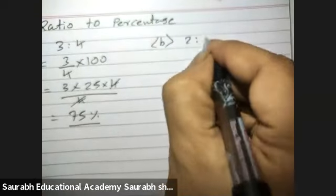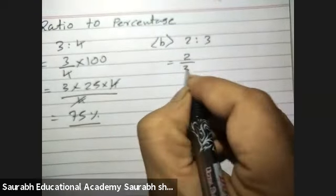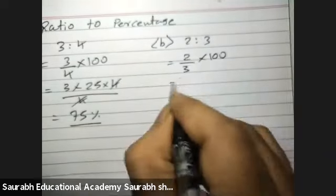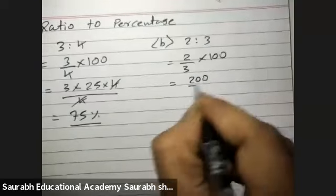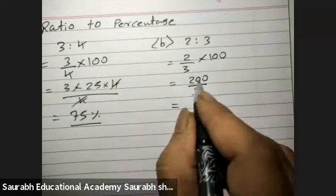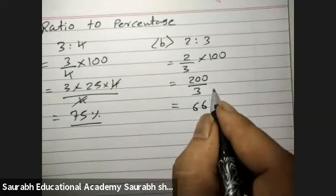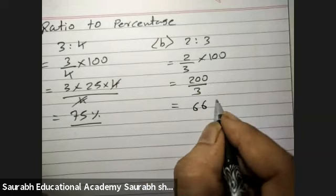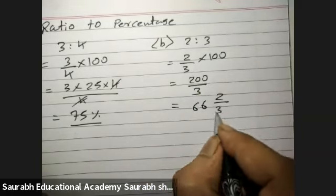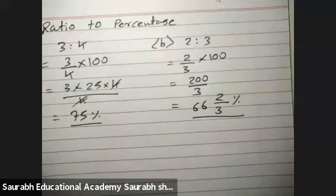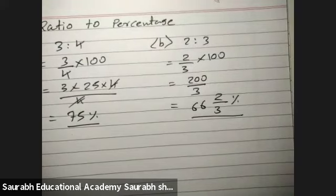Question B, 2 is to 3. That is 2 upon 3 into 100. 100 into 2, 200 by 3. 3 sigza 18, 2 0, 3 sigza 18, 2. That is 66 integer 2 by 3. That means 66 integer 2 by 3 percentage.